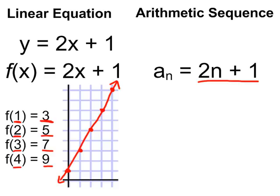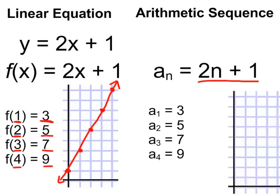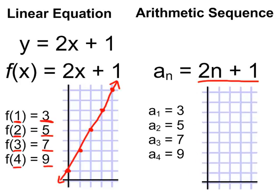So similarly, instead of saying f of 1 equals 3, I'll say a subscript 1 equals 3, or a sub 2 equals 5, a sub 3 equals 7. And similarly, although we don't do this quite as often, you may consider graphing these on a coordinate plane, and you would again get these same points.